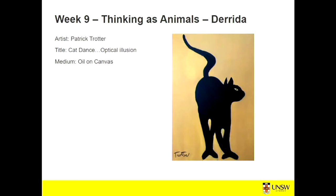I just want to comment very quickly on the image that I have chosen. It is, of course, an image of a cat. For those of you who've read Derrida's piece, you'll see that the cat motif is quite significant for him in that essay. The title of the image is 'Optical Illusion, Cat Dance.' Can you tell me why, if you see the optical illusion?